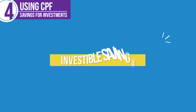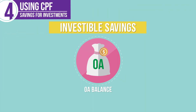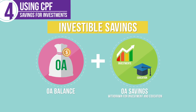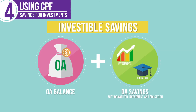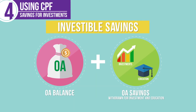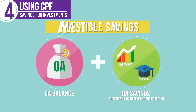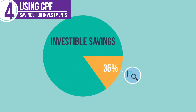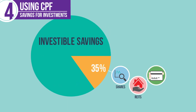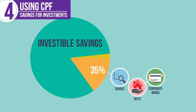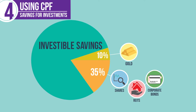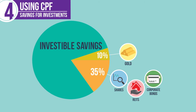Investable savings refer to the sum of your Ordinary Account balance and the amount of Ordinary Account savings you have withdrawn for investment and education. Of your investable savings, you can only invest up to 35% in stocks and 10% in gold, also known as the stock and gold limits.